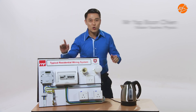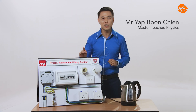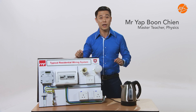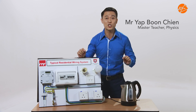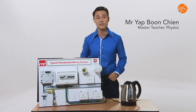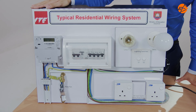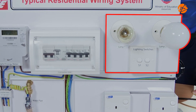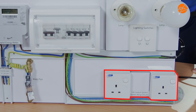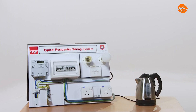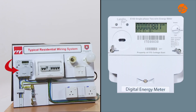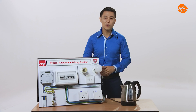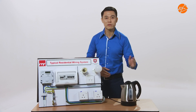In this video, I will show you how to calculate energy consumption and the cost of using electricity, and explain why using energy-efficient appliances is important. This demo kit is a simulation setup consisting of main household electrical components put together into a single panel. I will be using the electricity meter and power points. Let's calculate the energy consumption of boiling water.